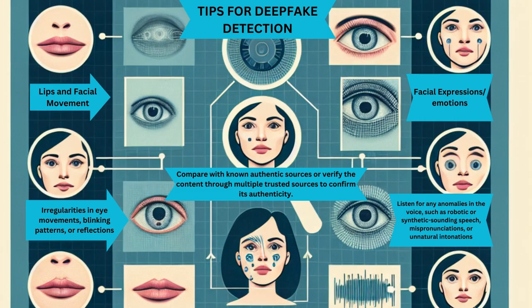Now I want to give you some tips for deepfake detection — how we as normal human beings can detect deepfakes. Lips and facial movement is one thing you should focus on. Apart from that, look for irregularities in eye movement — blinking patterns or reflections. Also listen for anomalies in the voice, such as robotic or synthetic-sounding speech, mispronunciations, or unnatural intonations. Facial expressions and emotions should also be observed. Most importantly, compare any information provided on digital media with known authentic sources, and verify content through multiple trusted sources to confirm its authenticity.